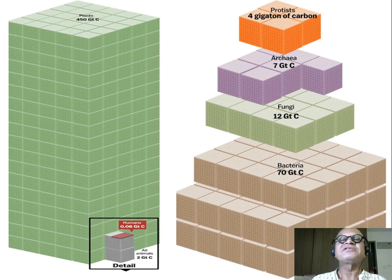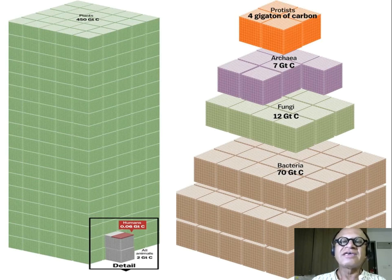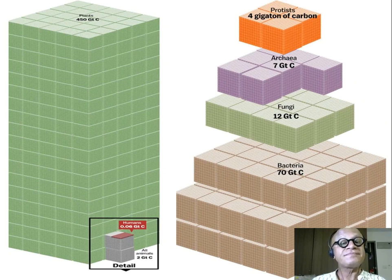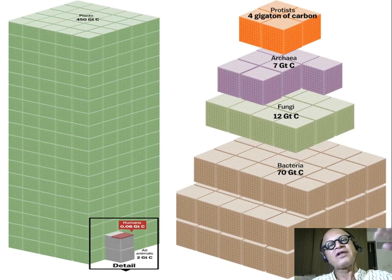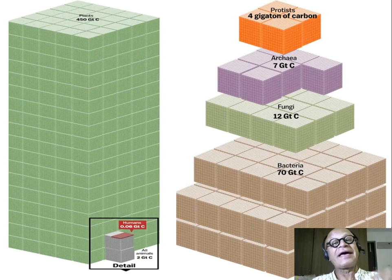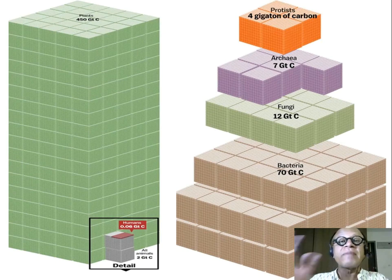On land, plants are estimated to be about 450 gigatons of carbon. Mega is 10 to the 6, giga is 10 to the 9. And humans, compared to that, look down here, all the animals together is 2 gigatons of carbon. And humans are just 0.06 gigatons of carbon. Since plants and photosynthesis form the base of the food web in terrestrial ecosystems, biomass of plants has to be much larger than all the other animals. So elephant may be huge, but the total biomass of elephants is obviously much smaller than the plants' biomass, because elephants eat plants.